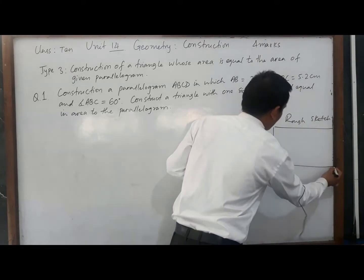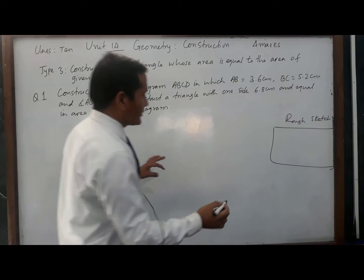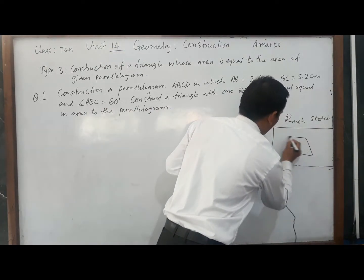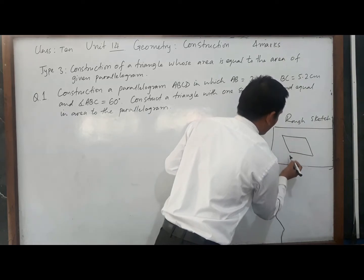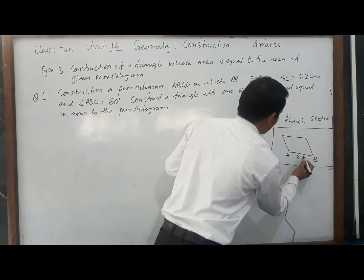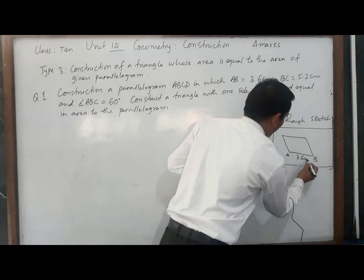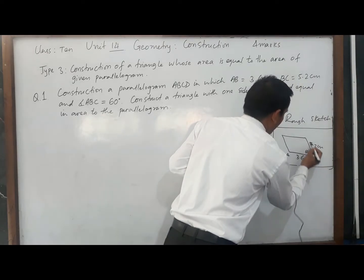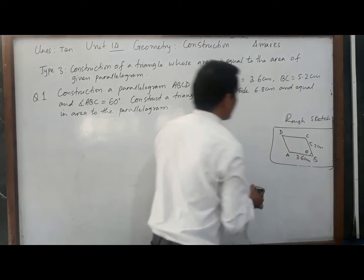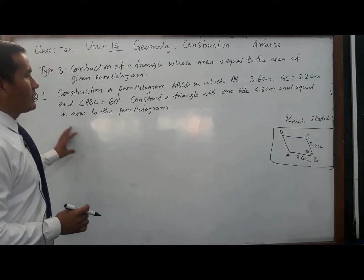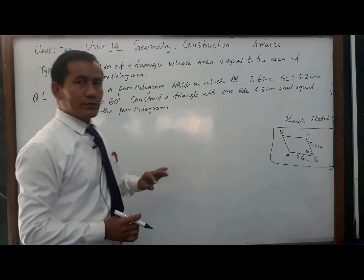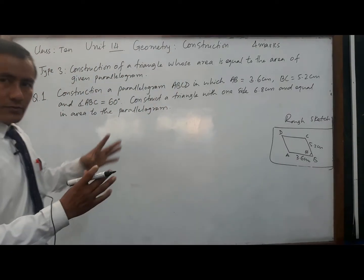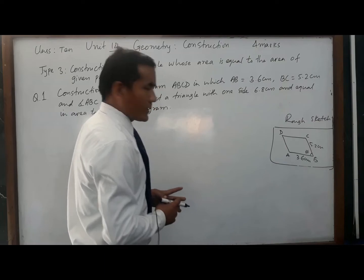Before starting construction, we need a rough sketch — we must draw for the construction with your free hand. First of all, we have to draw a parallelogram with the help of a free hand: AB, BC, CD, and DA. AB is 3.6 centimeters, BC is 5.2 centimeters, and angle ABC is 60 degrees. Then we have to construct a triangle whose area must be equal to the area of the parallelogram.